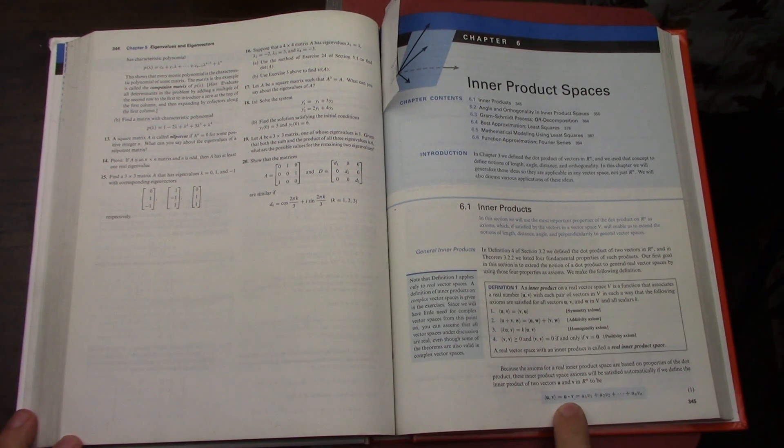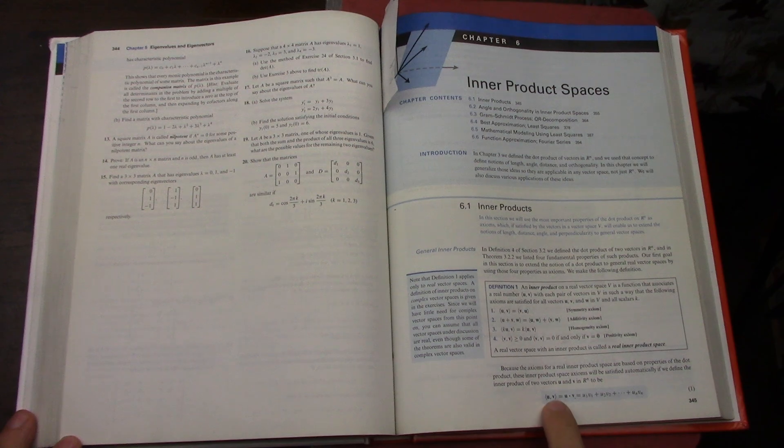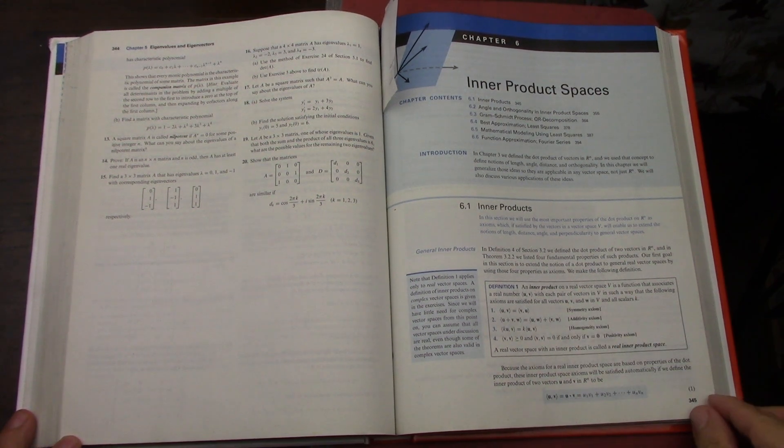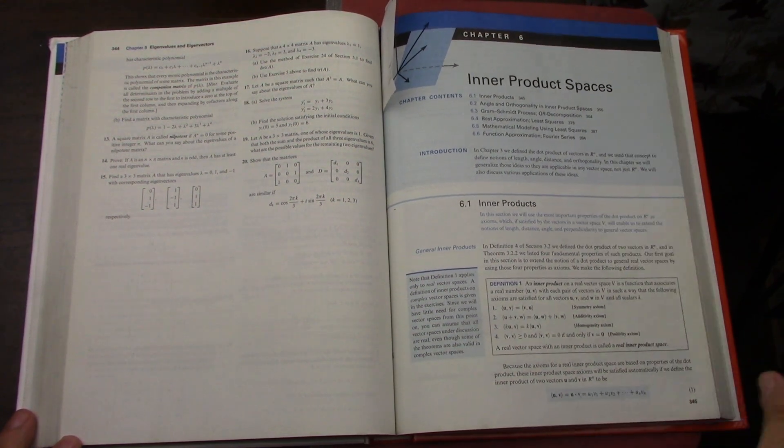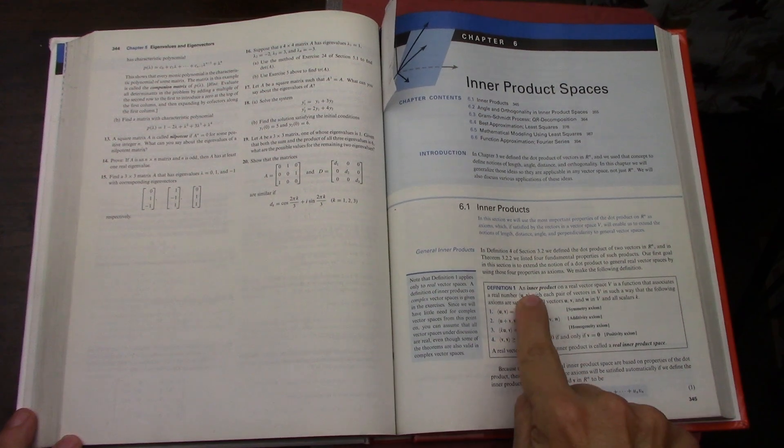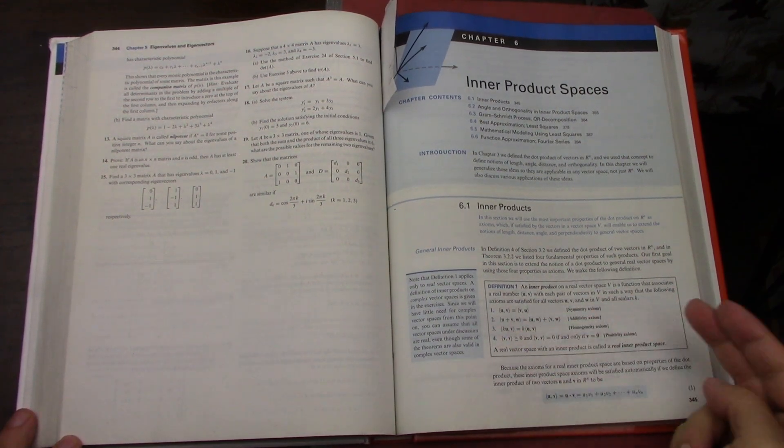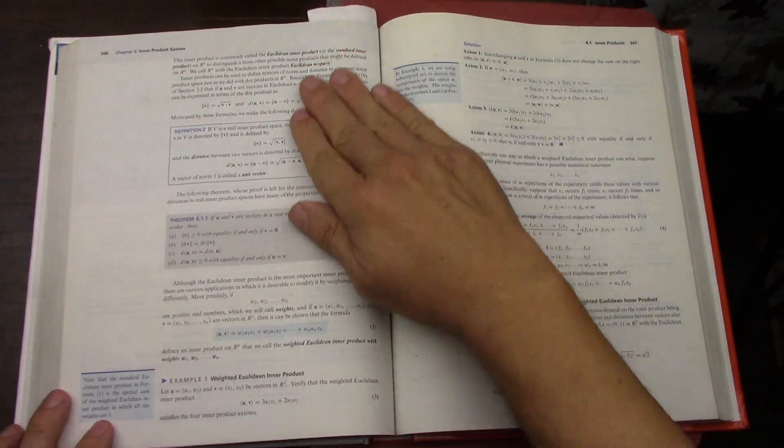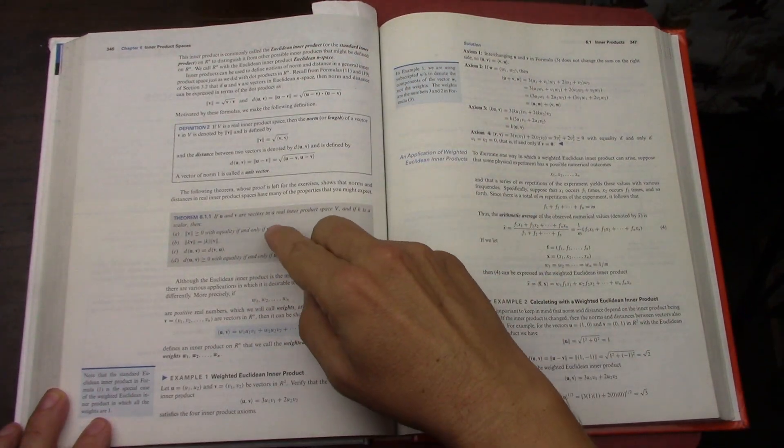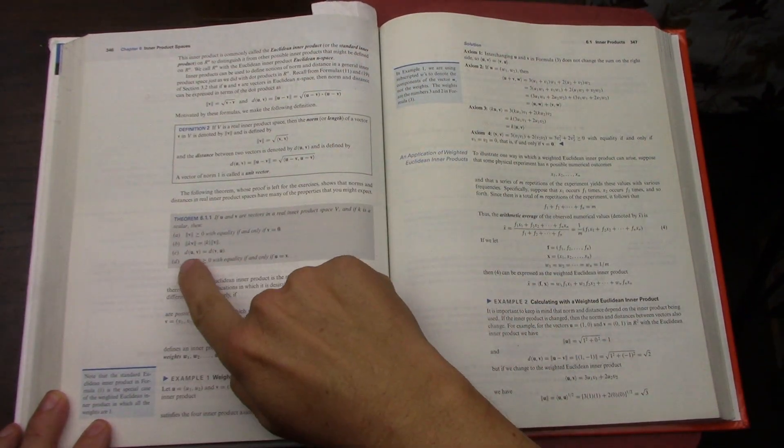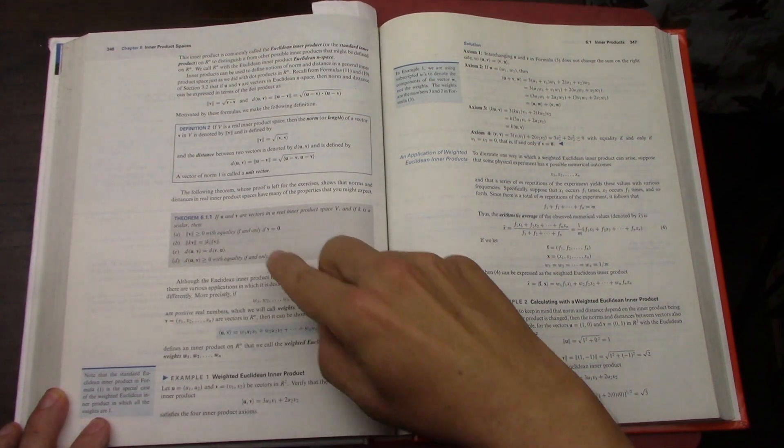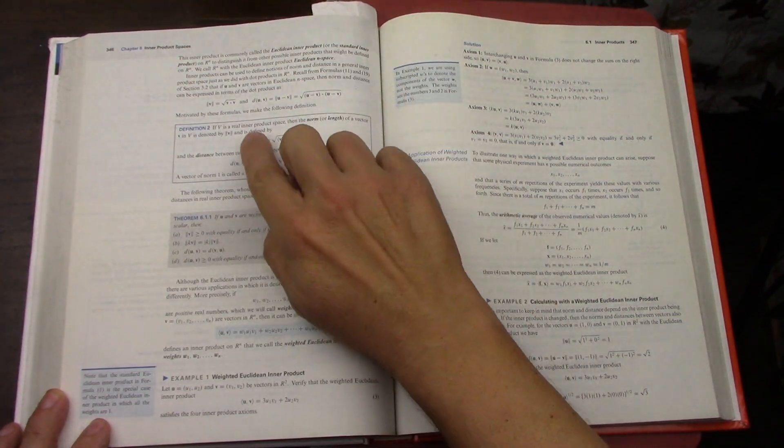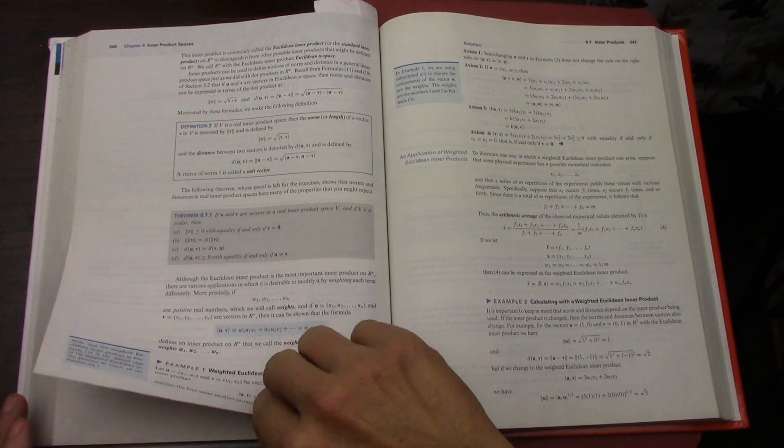There are four axioms for an inner product. For some of the problems I had to come back to these to prove them. Then there are various rules of the distance and the norm for inner product spaces.